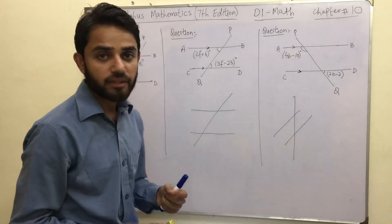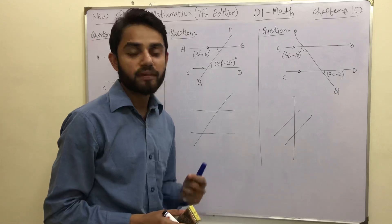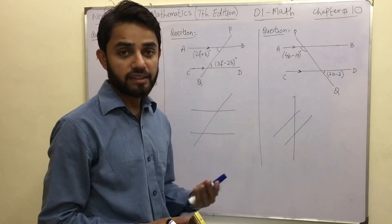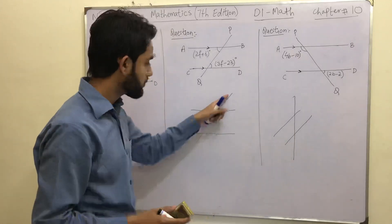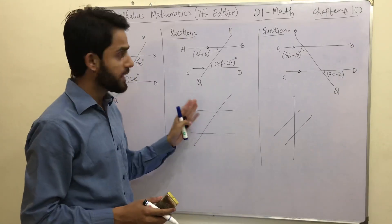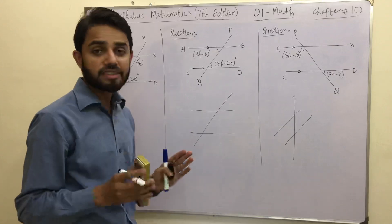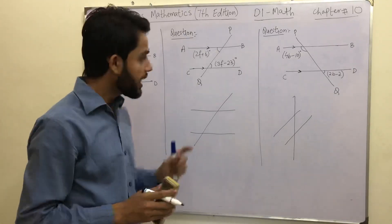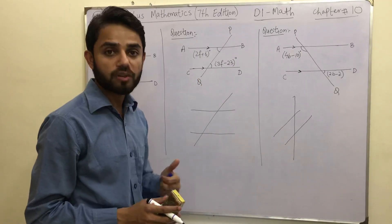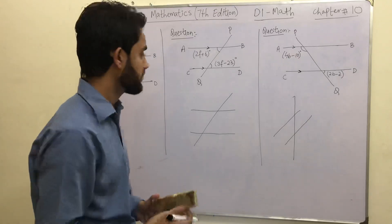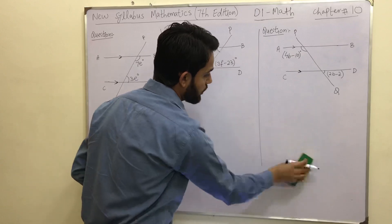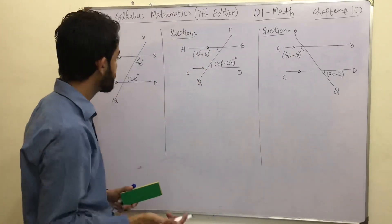What type of angles? We have alternate angles, opposite angles, cross-pointing angles, and vertical angles — there are many angles formed when a transversal cuts a parallel line. Today we are going to talk about a few of them. Please have your copy and pen with you, note down every question, and make sure you understand the concept. We are going to solve basic level questions.